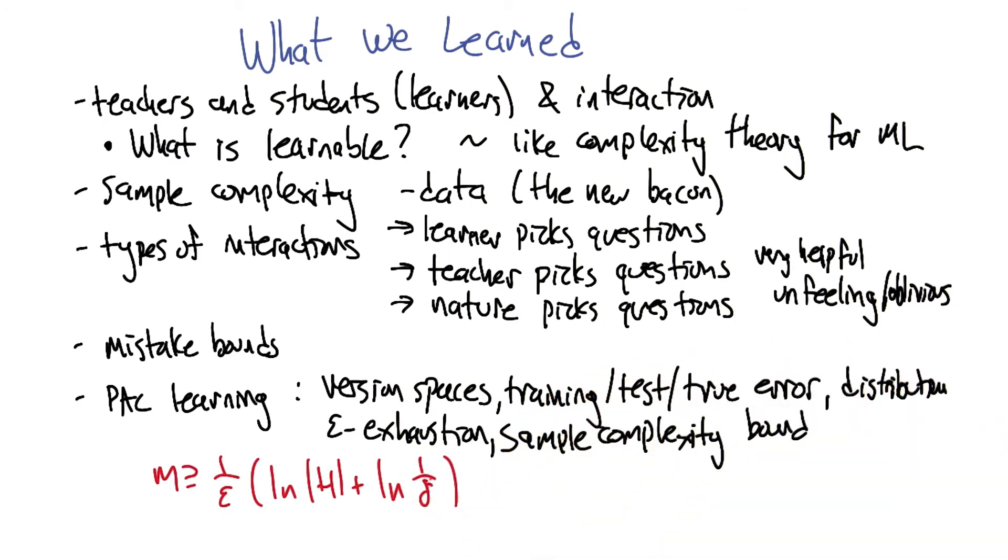So actually that reminds me, I had two questions about this, Michael. So the first question was, that equation m greater than or equal to one over epsilon times the quantity natural log size hypothesis space plus natural log of one over delta close quantity. Assumed that our target concept was in our hypothesis space, didn't it?